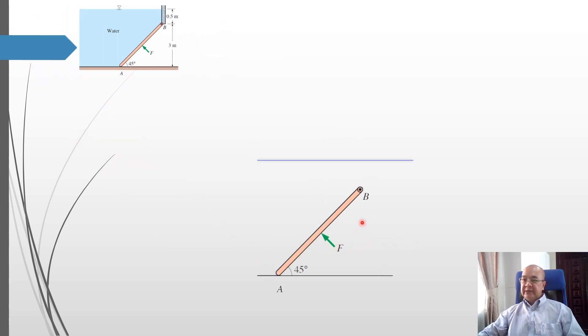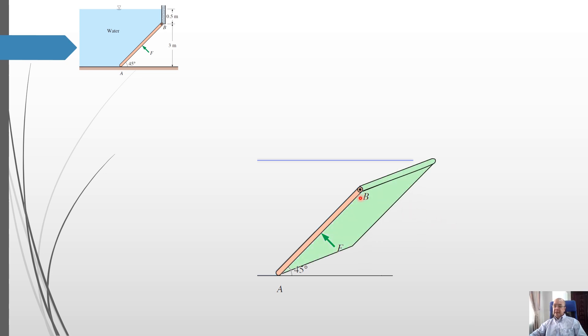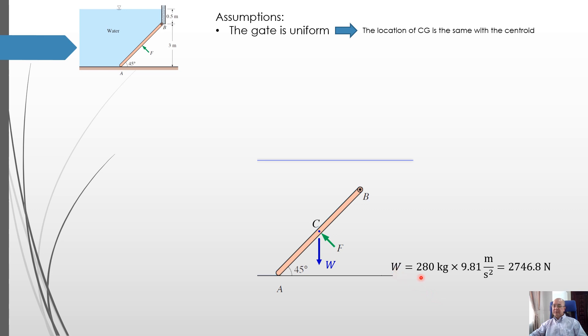So this is the gate. We know that the shape of the gate is rectangular. For a rectangular gate, the centroid will be right in the middle here, or in the 2D case, the centroid will be in the middle of this bar. Let's name the centroid point C. If we assume that the material of the gate is uniform, the center of gravity of the gate will be at the same location as the centroid. So the weight will be produced from this point C, directed downward. And the value according to the problem is 280 kg, or equivalent to 2746.8 N.